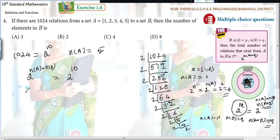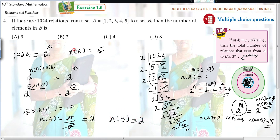2 to the power of, what is N of A? 5. Into N of B equal to 2 to the power of 10. Just you equate the powers, exponents. 5 into N of B equal to 10. N of B equal to 10 divided by 5. What is it? 2. N of B equal to 2.